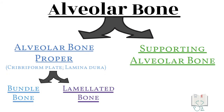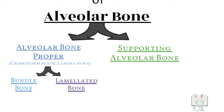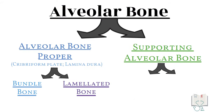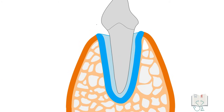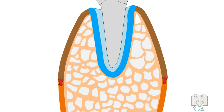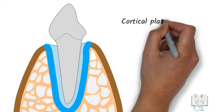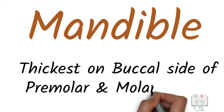Supporting alveolar bone. The alveolar bone surrounding the tooth socket forms the supporting alveolar bone. It has two parts: cortical plates and spongy bone. Cortical plates consist of compact bone and form the inner and outer plates of the alveolar process. Cortical plates are continuous with the compact bone of the body of the maxilla and mandible. They are thicker in the mandible than in the maxilla. Moreover, in the mandible they are thickest on the buccal side of the premolars and molar region.